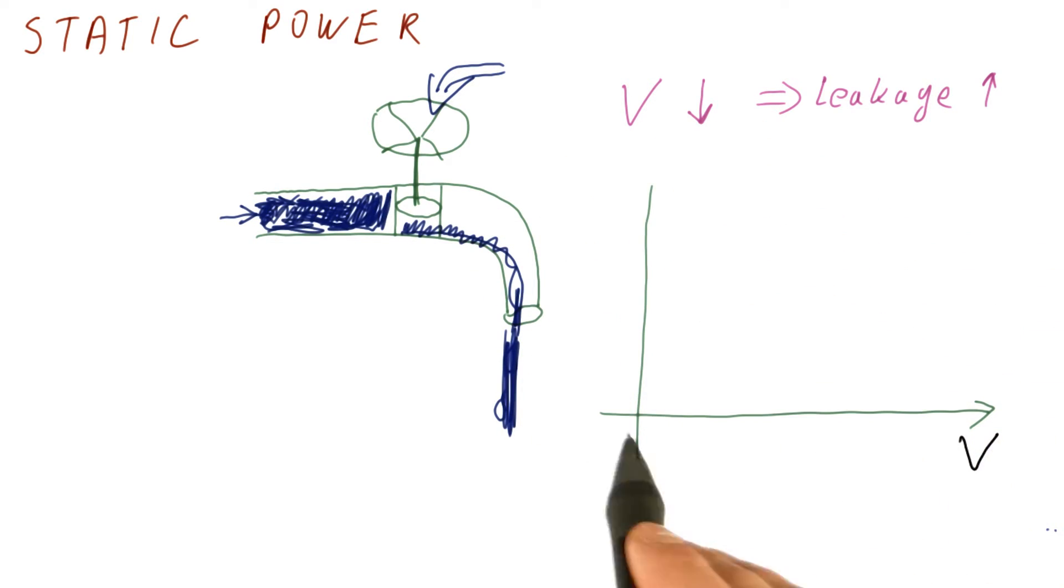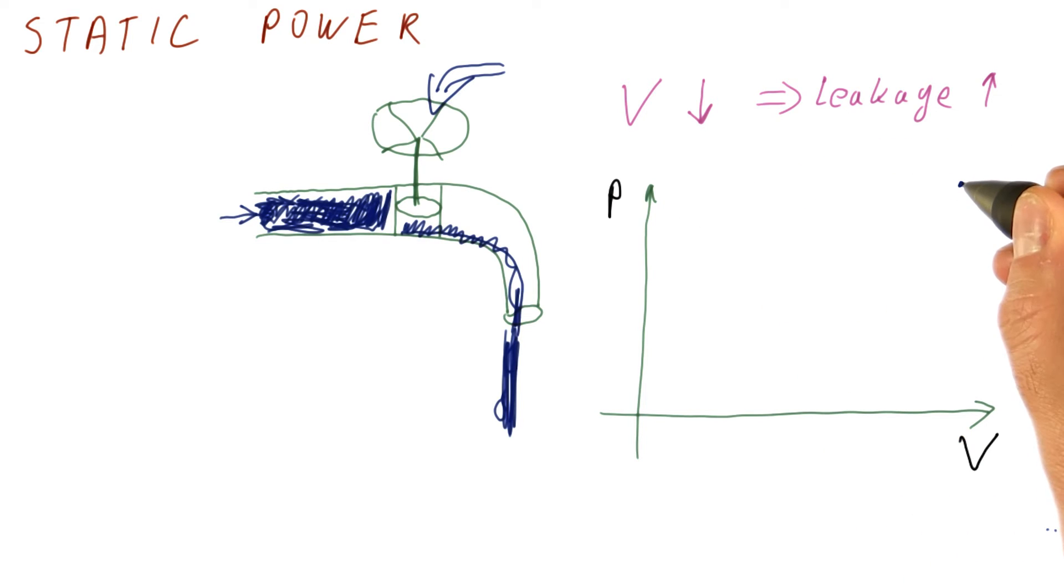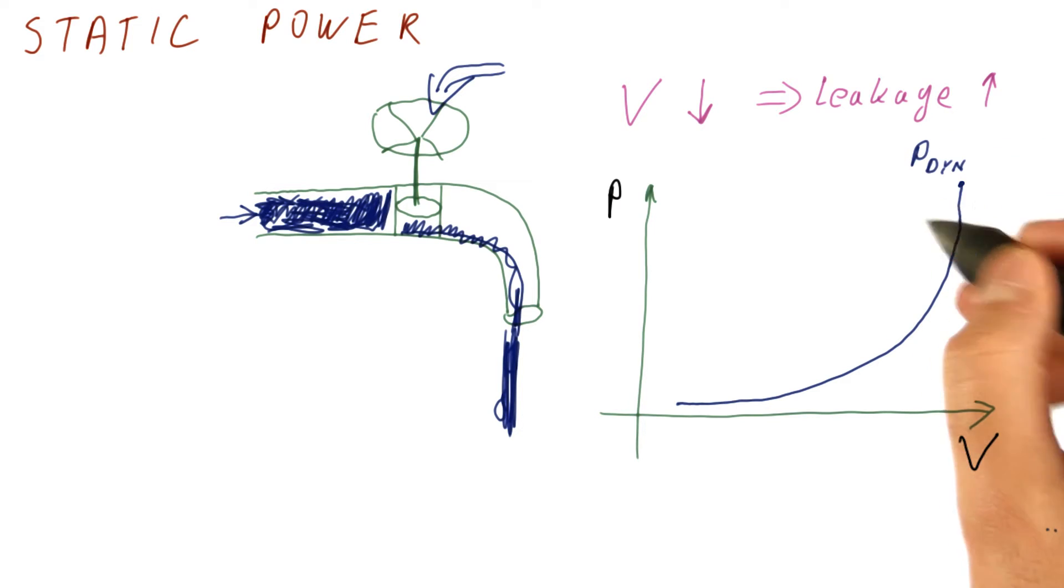So if we draw the voltage on the horizontal axis and the power on the vertical axis, what we get is when the voltage is very high, our dynamic power is also very high, but it drops quickly as we lower the voltage. So this is our dynamic power.